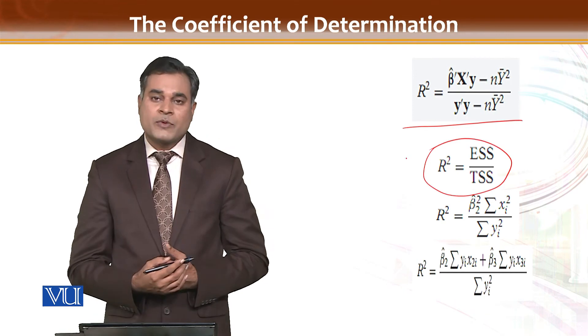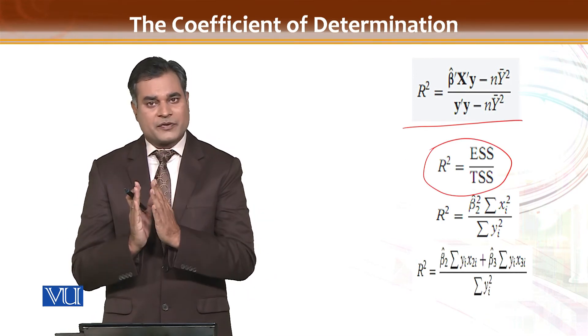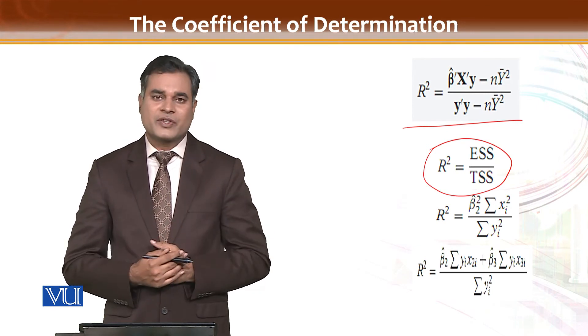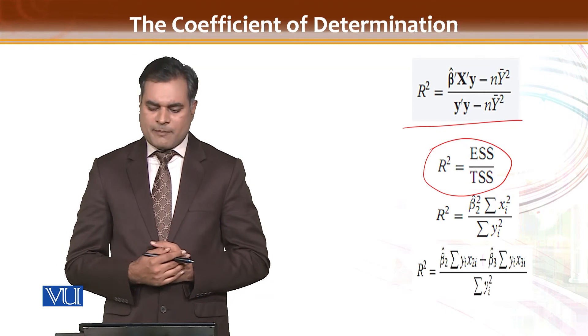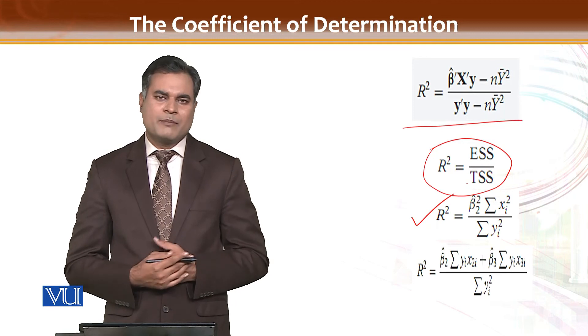Secondly, as I shared with you, R square is basically explained sum of square divided by total sum of square. So from this we can find R square, and by using your formula approach or division form, you can use it in the model.